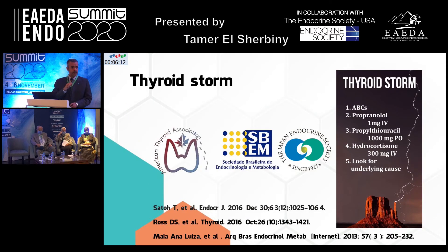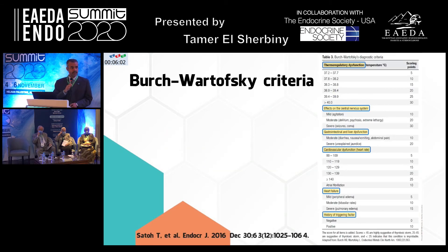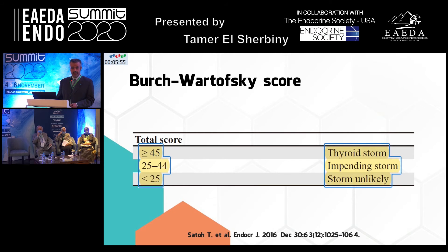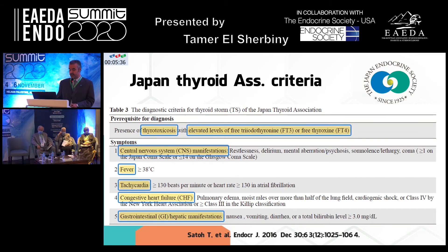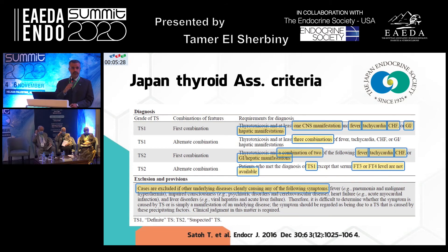We now go to thyroid storm. Recommendations come from the American Thyroid Association, the Brazilian Society of Endocrinology and Metabolism, and the Japanese Endocrine Society. We have two sets of diagnostic criteria. The older one is the Burch-Wartofsky criteria — a scoring system giving a likely or unlikely diagnosis of thyroid storm. The more recent one was introduced in 2016 by the Japan Endocrine Society, depending on thyroid excess, CNS manifestations, fever, tachycardia or atrial fibrillation, congestive heart failure, and gastrointestinal or hepatic dysfunction to give a definite or indefinite diagnosis.